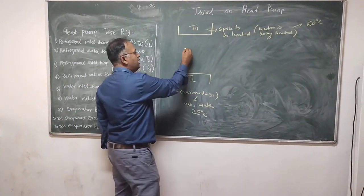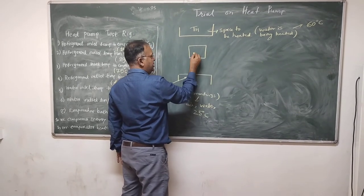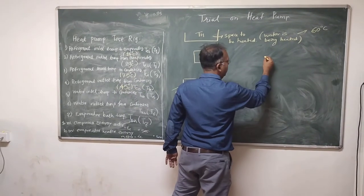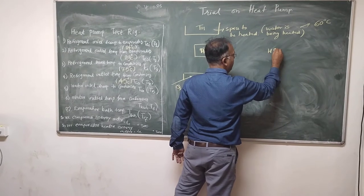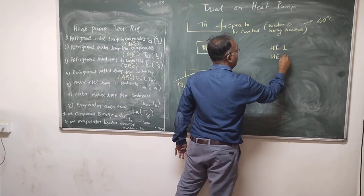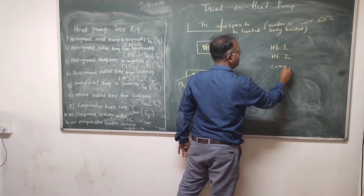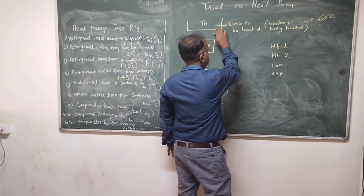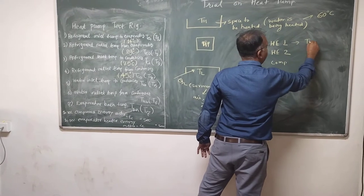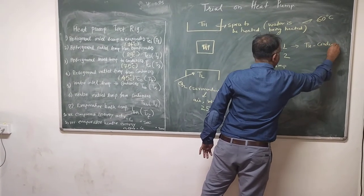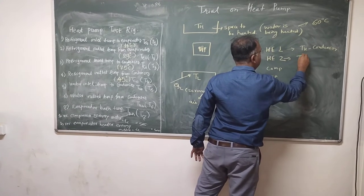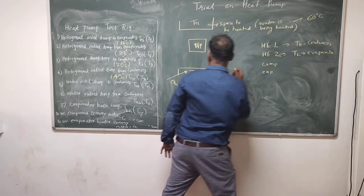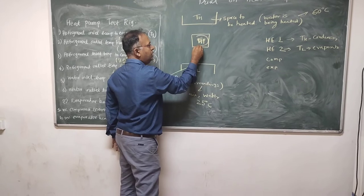What does the heat pump do? The heat pump employs the refrigeration system, meaning it has two heat exchangers — heat exchanger 1 and heat exchanger 2 — plus a compressor and an expansion device. Heat exchanger 1 is at the higher temperature TH, which is nothing but the condenser. Heat exchanger 2, which is nothing but the evaporator, is at the lower temperature.